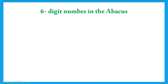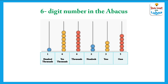Six digit numbers in the abacus. Now I am going to show you the six digit number in the abacus. Here you can see an abacus with the numbers of beads written for each rod. In the first rod we have five beads, then three beads, two beads, six beads, again six beads, and one bead. Their place values are ones, tens, hundreds, thousands, ten thousands, and hundred thousands in the international number system.